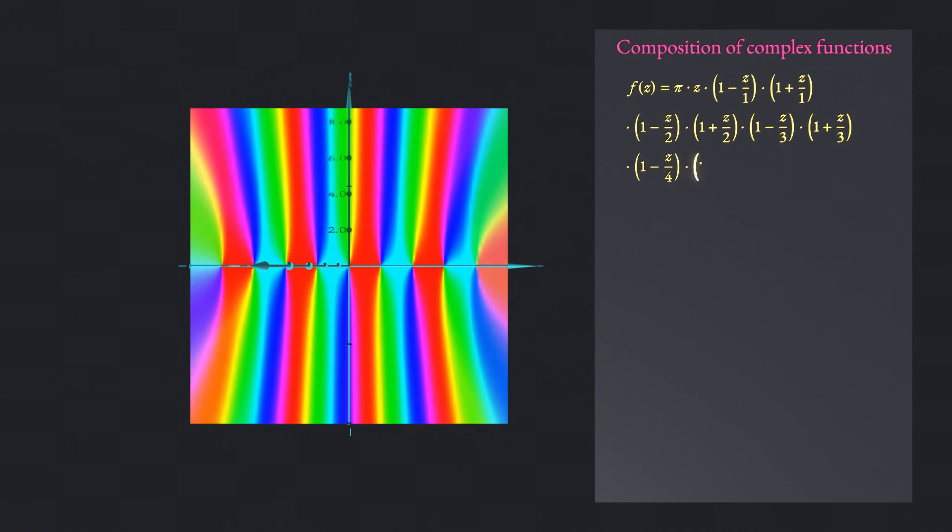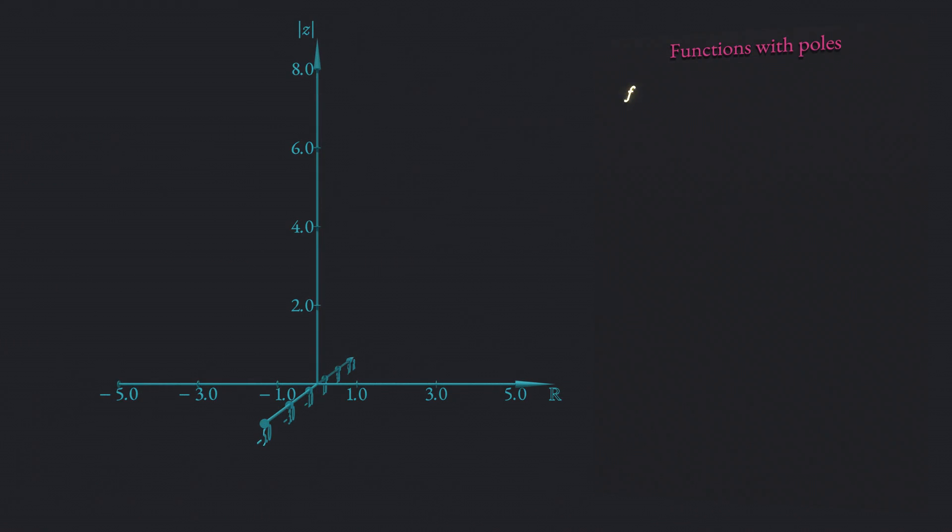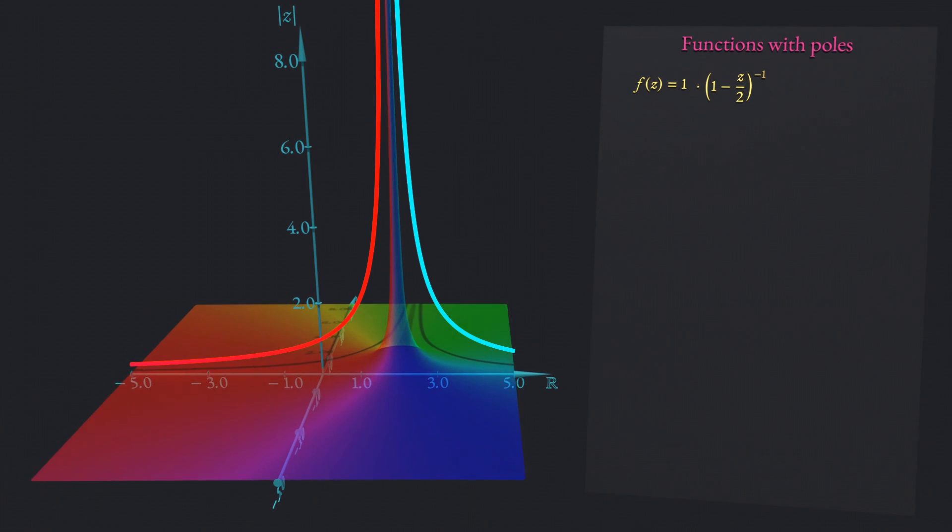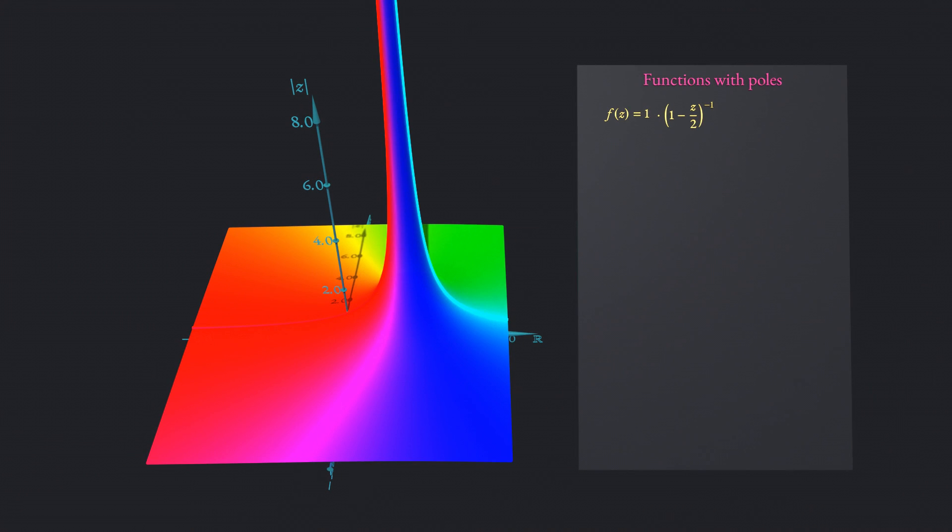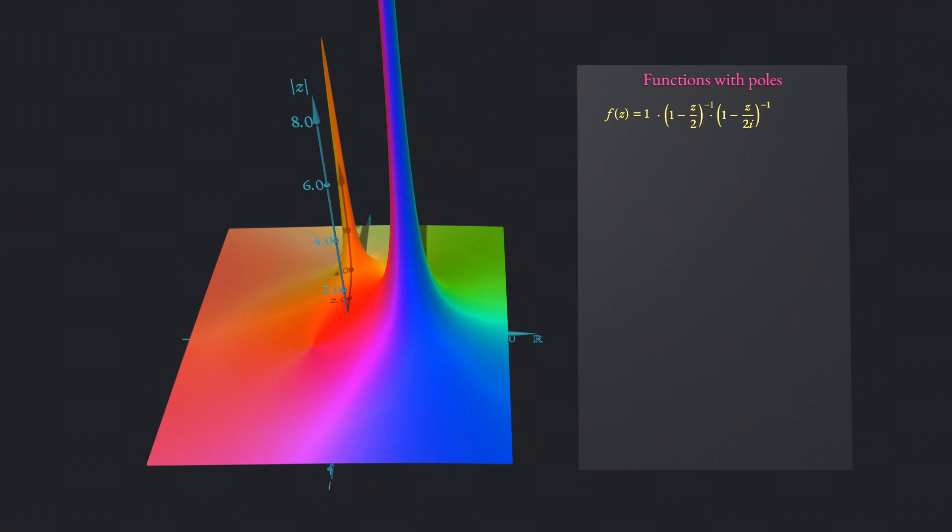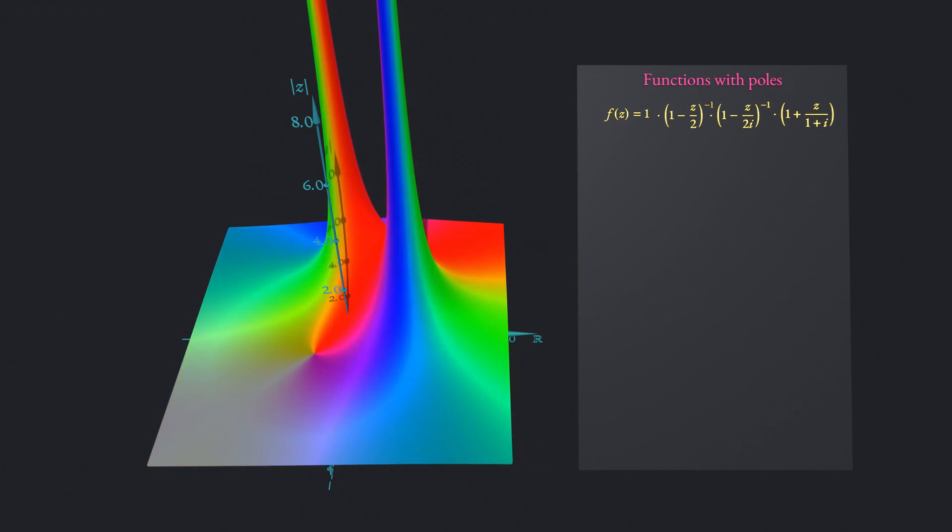Besides zeros, there is a second kind of building block that introduces another kind of special points, so-called poles. In this example, there is a pole located at x equal 2. Poles are generated with similar terms, but this time they appear in the denominator. For convenience, the term can be rewritten as a factor with a negative exponent. If focused only on the real part, these poles appear to be rather disruptive discontinuities. But once the full complex function is considered, there is a continuum of phase values that smoothly interpolates between the positive and the negative value. And if we included the point of infinity to the complex numbers, the function would be well behaved everywhere. Much like in the case of zeros, further poles can be introduced by corresponding factors and they can be combined with zeros.